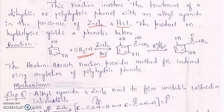On acid hydrolysis we get a formylated product. In this reaction we get two types of products: one is the ortho product and another is the para product. Generally the ortho product is obtained as the major product because of intramolecular hydrogen bonding.